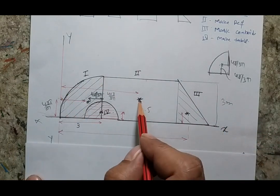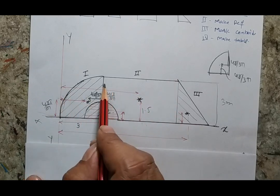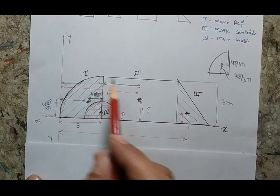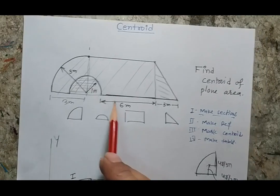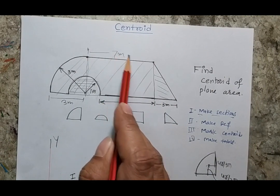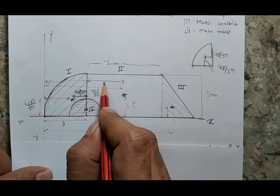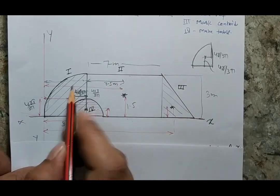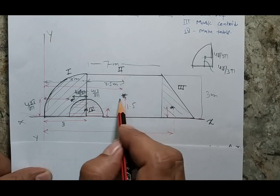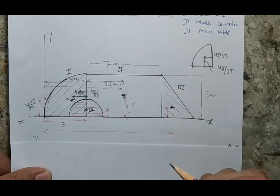The position of the centroid of the rectangular body with respect to my reference is this distance plus that distance. The width is 6 and there is 1 more, so that total distance is 7 meters, giving a half-distance of 3.5 meters. So the position of the centroid of section 2 is 3 plus 3.5 in the x-direction and 1.5 in the y-direction.